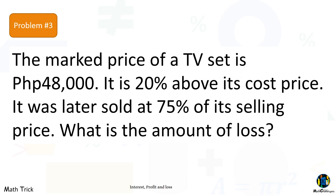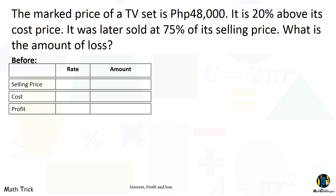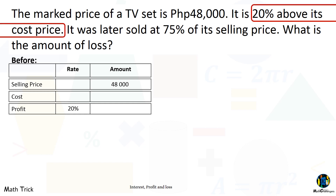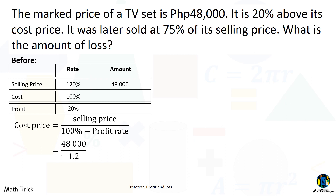Problem number 3. The marked price of a TV set is 48,000 pesos. It is 20% above its cost price. It was later sold at 75% of its selling price. What is the amount of loss? The marked price is 48,000 pesos and the profit is 20%, so the cost is 100% and the selling price is 120%. The cost price equals selling price divided by 1.2: 48,000 divided by 1.2. The cost of the TV set is 40,000 pesos.